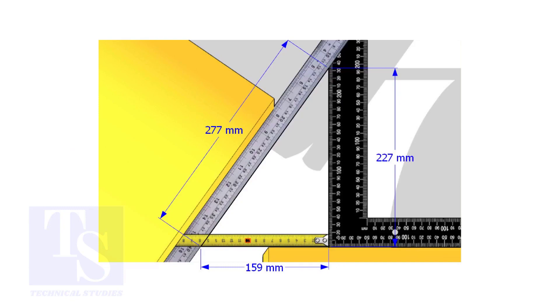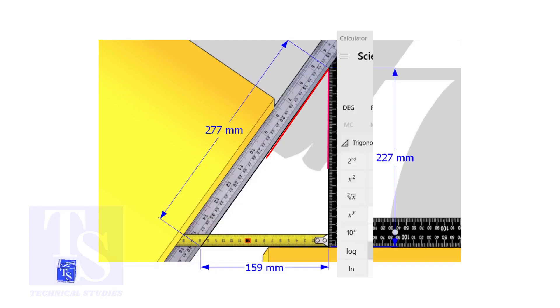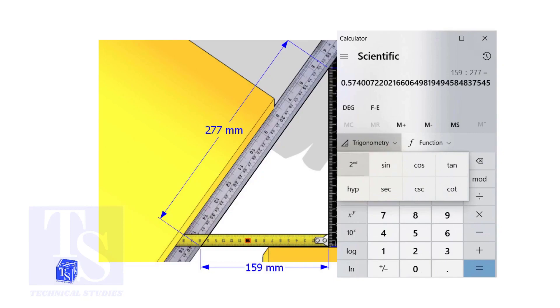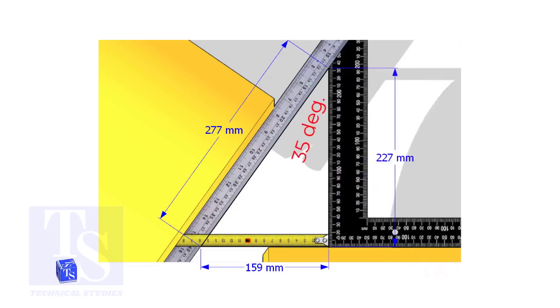Let us calculate the included angle. If you apply the sine rule, the angle will be 159 divided by 277, shift sine. So the answer is 35 degrees.